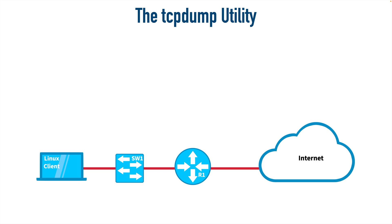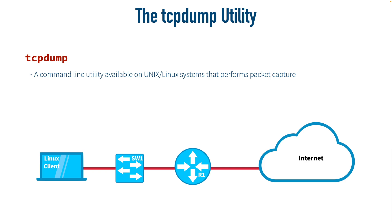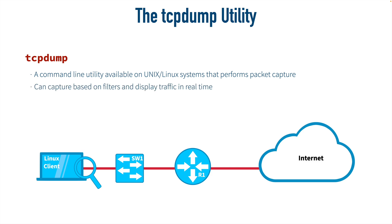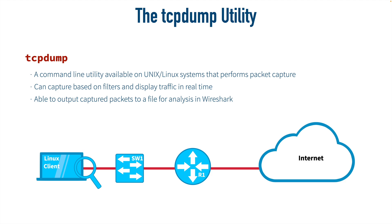The tcpdump utility is executed from the command line on Unix and Linux platforms and performs packet capture. For example, we can tell tcpdump to monitor a specific interface, and packets can be displayed on screen or redirected to a file. We can apply filters — such as capturing only packets to or from port 443 — to avoid overwhelming output. One of the most useful features is outputting the capture to a file that can be opened in Wireshark, a freely available and very powerful traffic analysis tool.